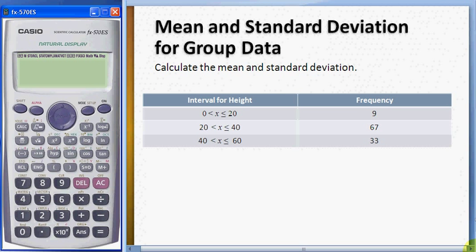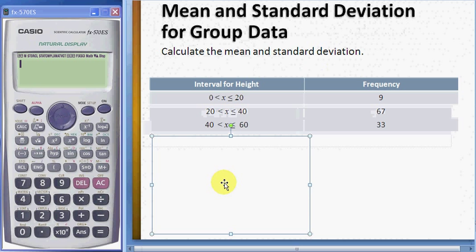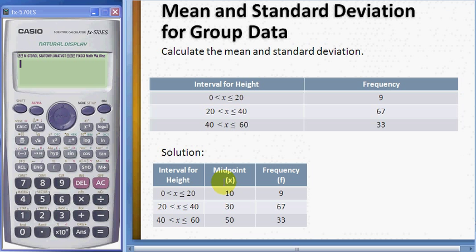To find the mean and standard deviation for this type of grouped data, what you need to do is you have to find the midpoint X for the data before you key in the data into your calculator.